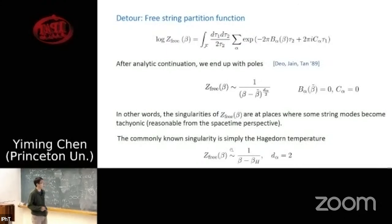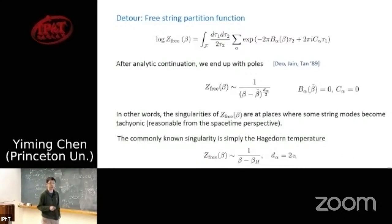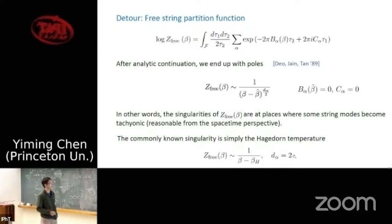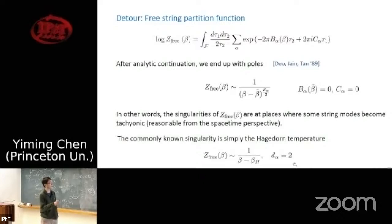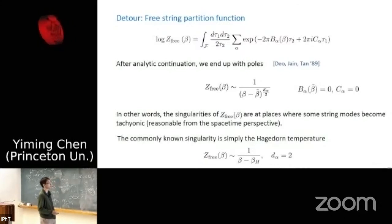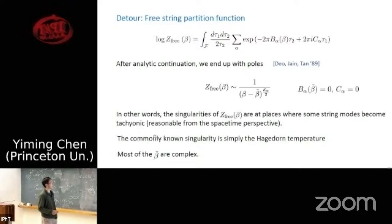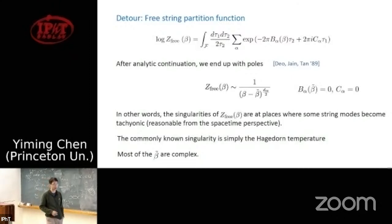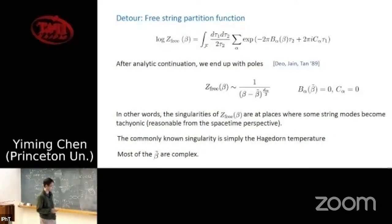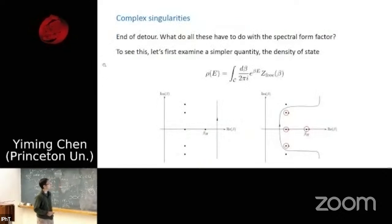The commonly known singularity is nothing but the Hagedorn temperature, where d=2 because there are two winding modes (winding number +1 and -1), giving a simple pole in the free string partition function. A Laplace transform gives the continuous Hagedorn density of states. An important feature is that most singularities beta_* are complex — they don't lie on the real axis — and this will be crucial in the spectral form factor discussion.